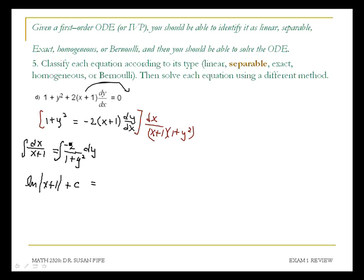On the right side, this negative 2 can come out. It's just a constant. And when you integrate 1 over 1 plus y squared, you get arctangent.